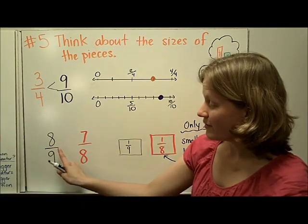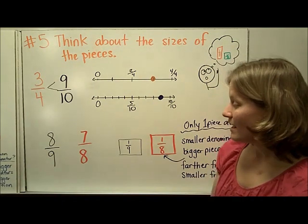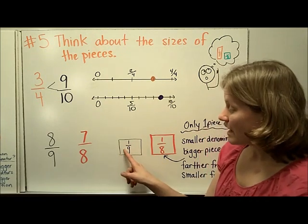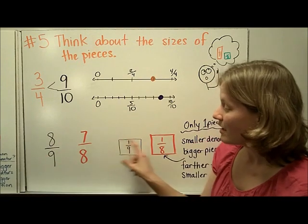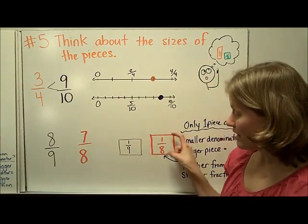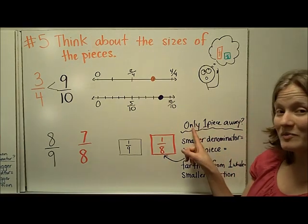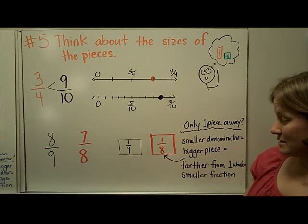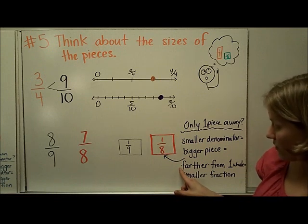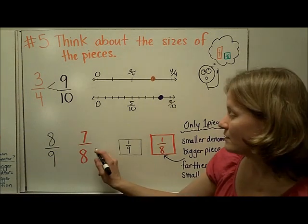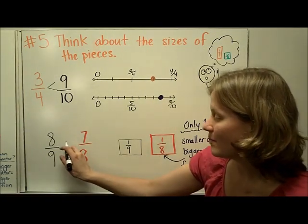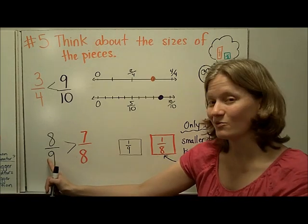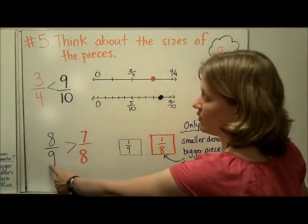Here's another example where we're only one piece away from one whole in each fraction. If I picture fraction towers, one-ninth would be a little bit smaller than one-eighth. So the piece to get to one whole for ninths is smaller than for eighths. The smaller denominator — eighths — means a bigger piece, which means it's farther away from one whole, so it's actually the smaller fraction. Therefore, eight-ninths is greater than seven-eighths because the distance from one whole is smaller for nine-ninths.